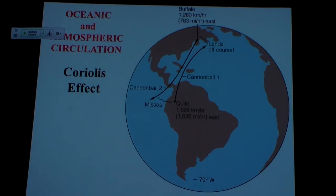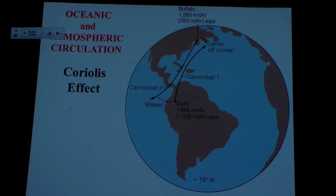Likewise, when they shot back southward, now Earth is the one moving faster — getting ahead of the projectile that's only moving east at 783 miles per hour. So the shell lags behind, and Earth rotates out from under it at a faster rate, and it goes off course again. As I go north, I see a curve that's clockwise. As I fire south, I also see a curve that is clockwise.